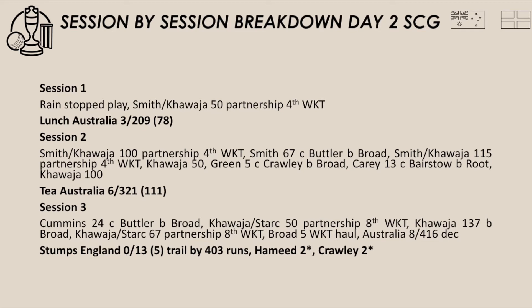Australia declared 8 for 416 in their first innings. England were at stumps 0 for 13, trailing by 403 runs, with Hameed 2 not out and Crawley 2 not out.